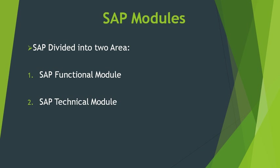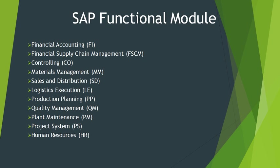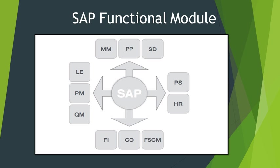SAP has different modules, divided into two areas: functional modules and technical modules. Functional modules include SAP FI (Financial Accounting), Controlling, Production Planning, Quality Management, Human Resources, Material Management, and Sales and Distribution — covering all business functionalities within an enterprise.